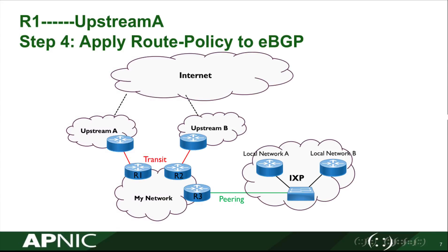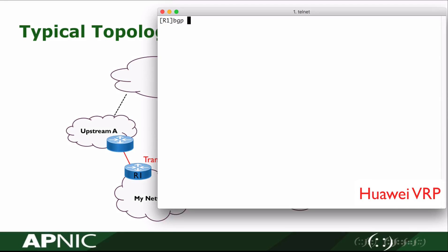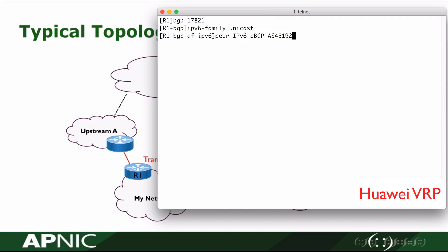In step 4, we will apply the route policy to the eBGP neighbor. Get into BGP view in the IPv6 address family. For this eBGP group, we add the route policy we defined in step 2 at the outbound direction.